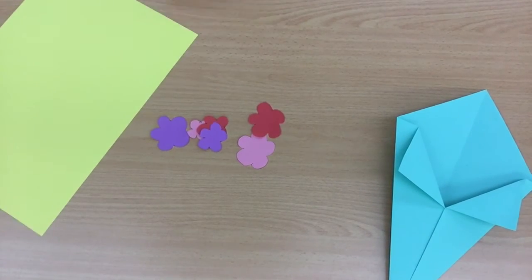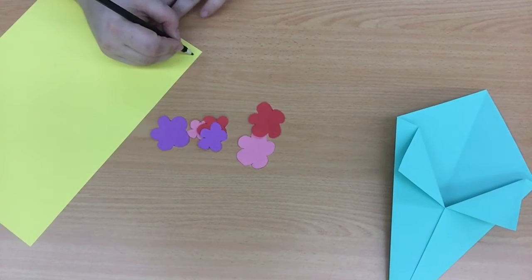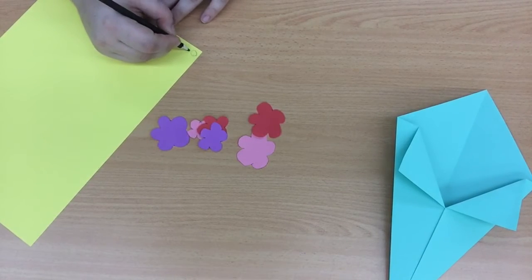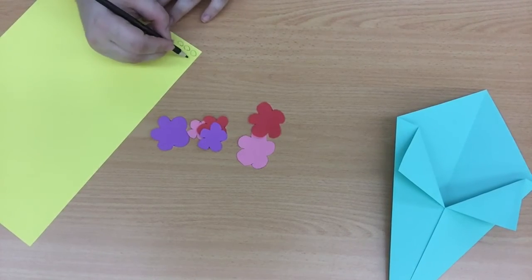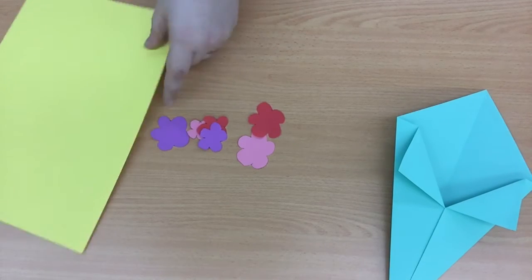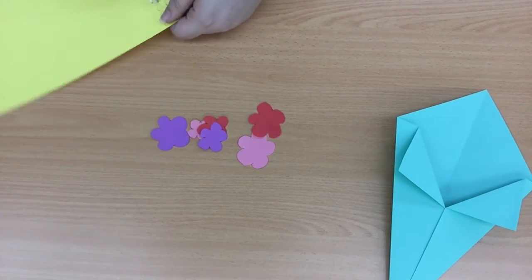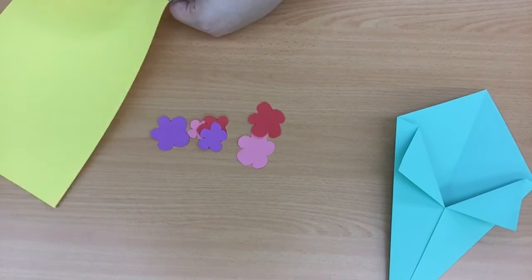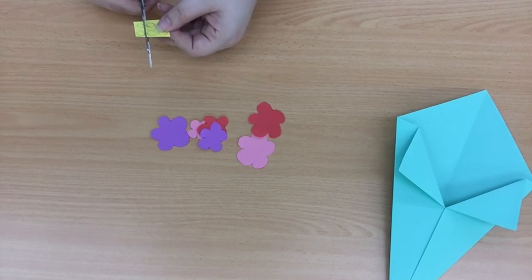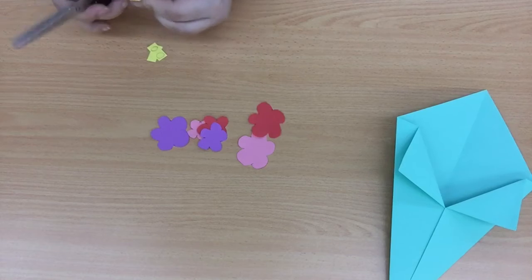Now let's put our scissors down and get a pencil. We're going to draw as many circles as you have flowers. In my case that's six. Then we're going to take our scissors and cut them out.